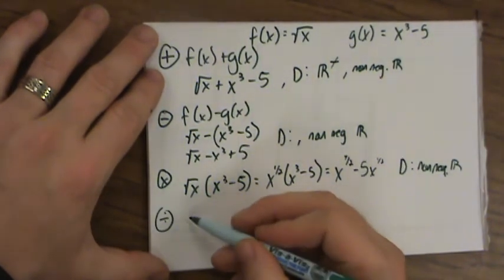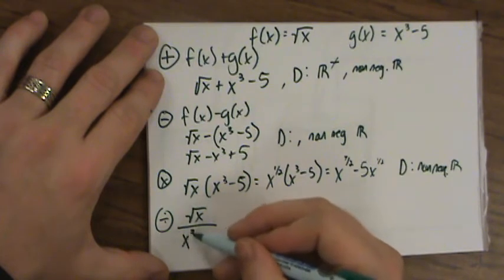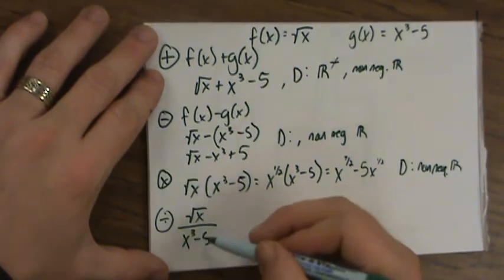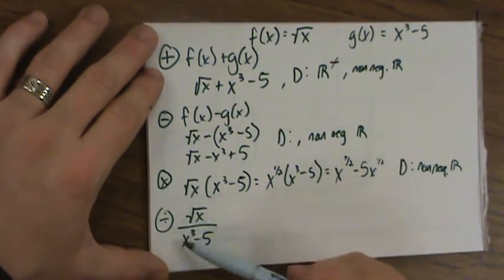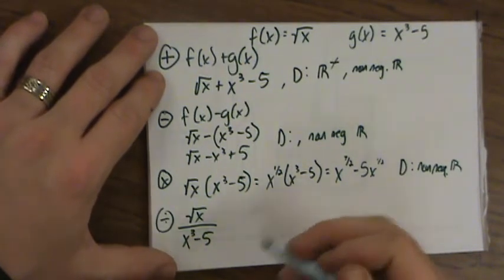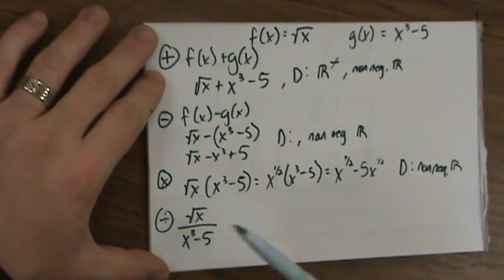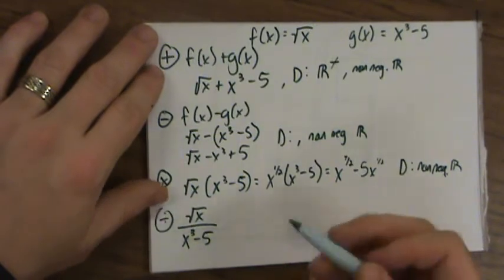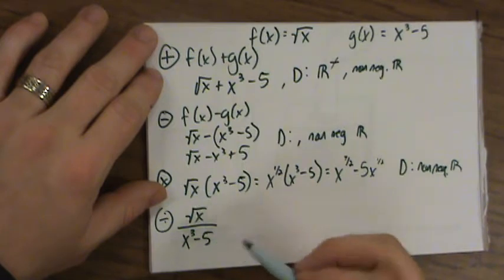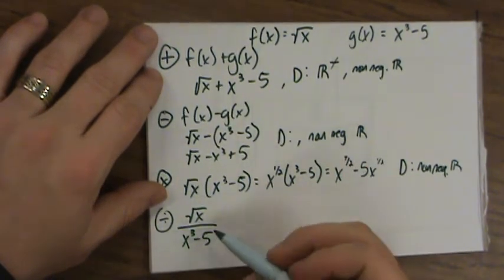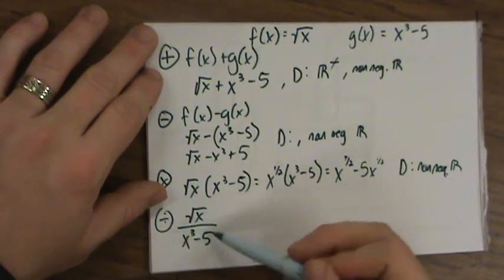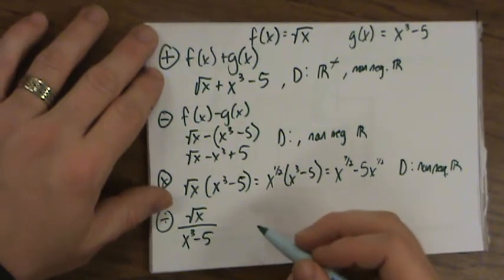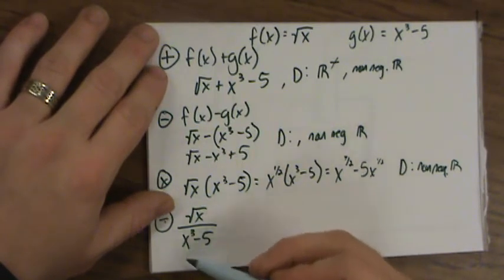And division. If I want to do f(x) divided by g(x), this is what it would look like. It would be square root of x over x to the third minus 5. There's really nothing to simplify here. But now the domain part of it is going to be a little different. The domain still is, we still can't put negative numbers into the square root, so still no. But also, what else causes the problem? What's going to cause a problem? I can't put in negative numbers. But I also couldn't put anything into the denominator here that would cause the denominator to be zero. You can't have a zero in the denominator.